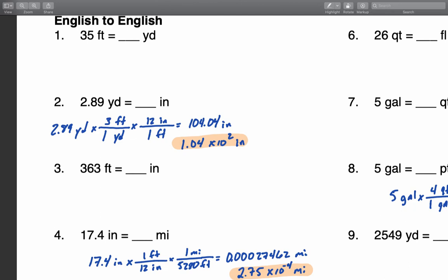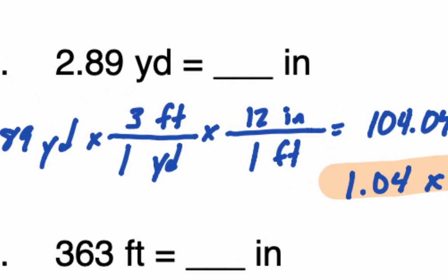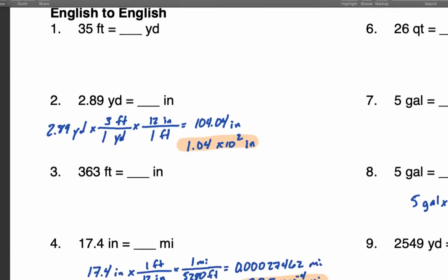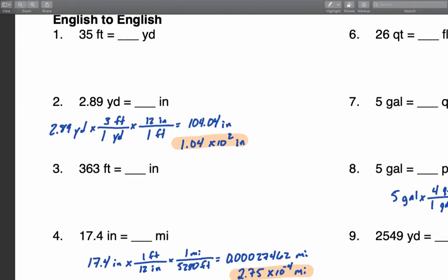Let's look at how we're going to present our answers with the correct number of significant digits from the conversions done on Monday. Looking at the document posted with the worked-out answers, you'll see a highlighted answer — that is the format I want you to use going forward. For conversions, we are simply going to look at the very first number you were given to determine the number of significant digits for our answer.